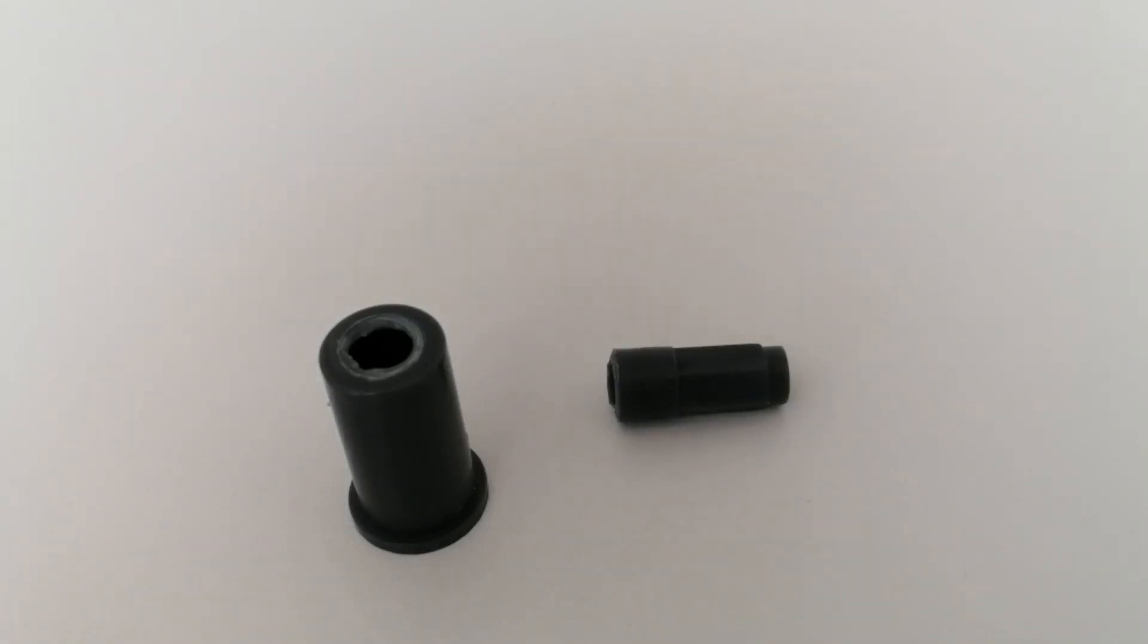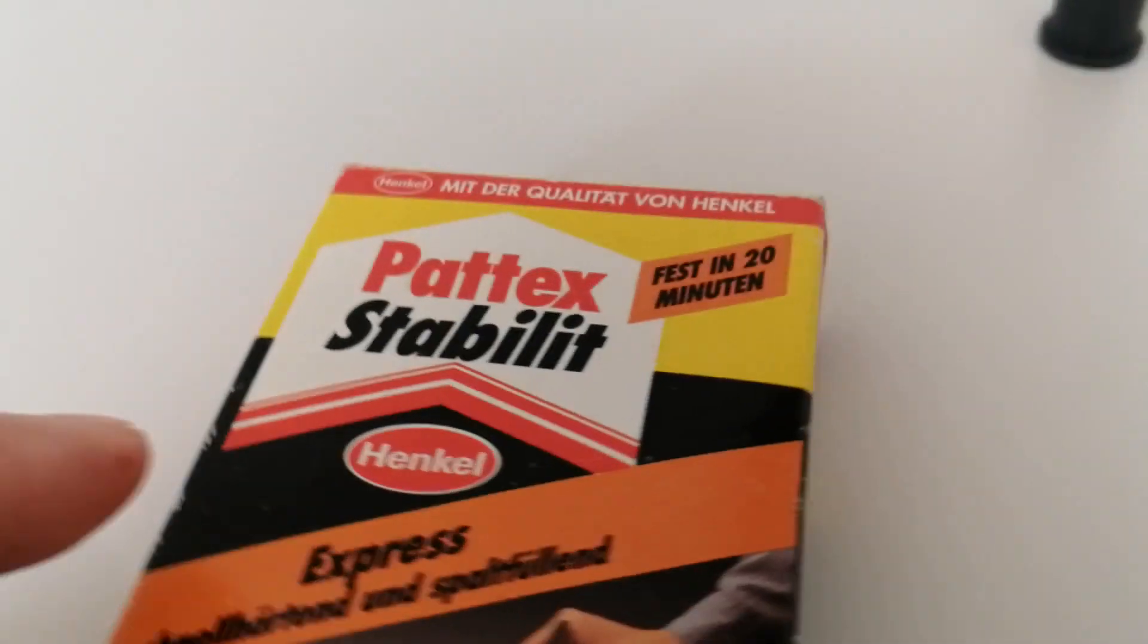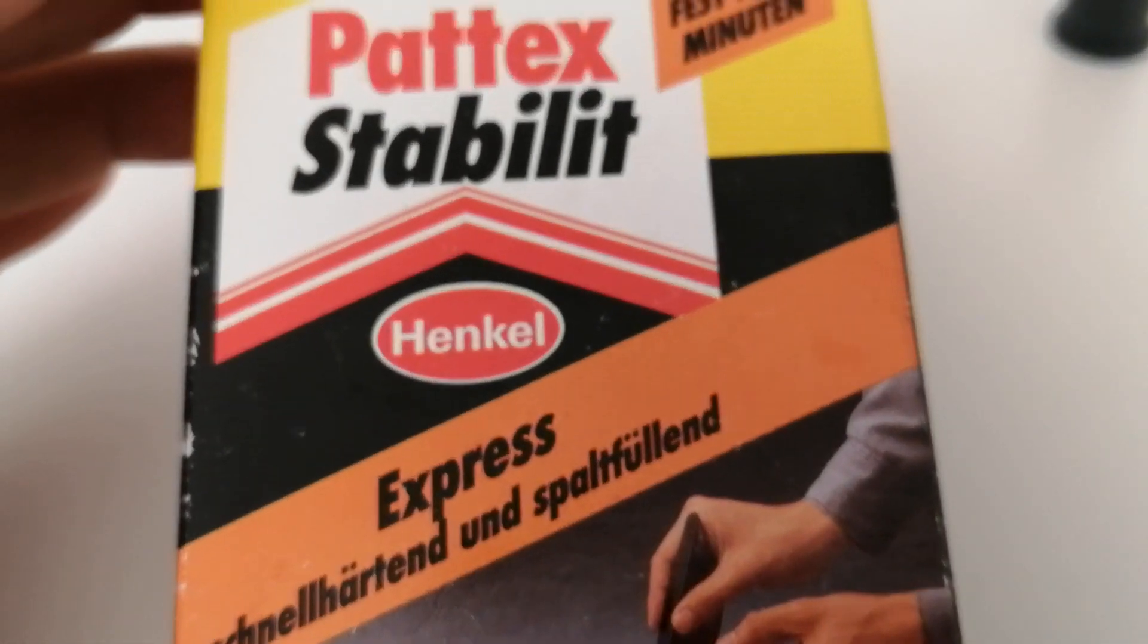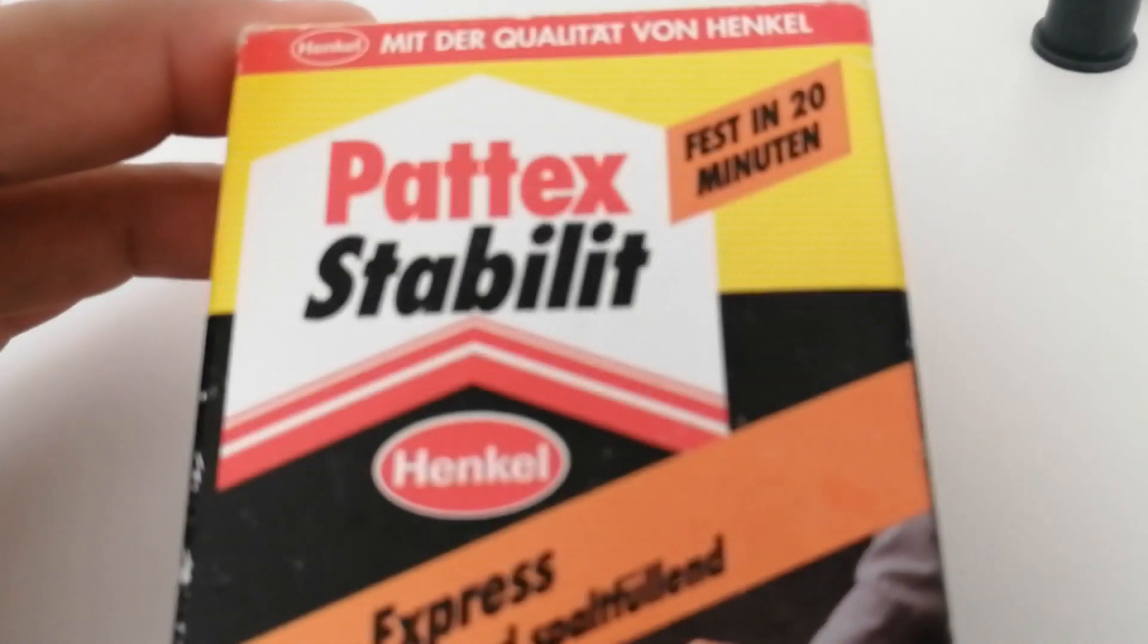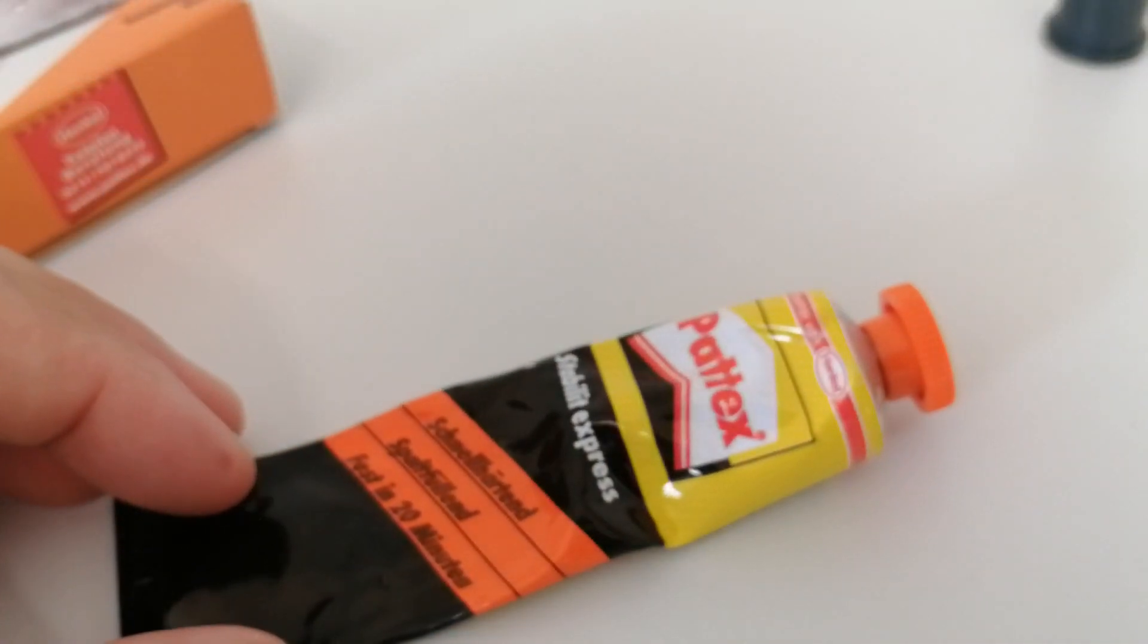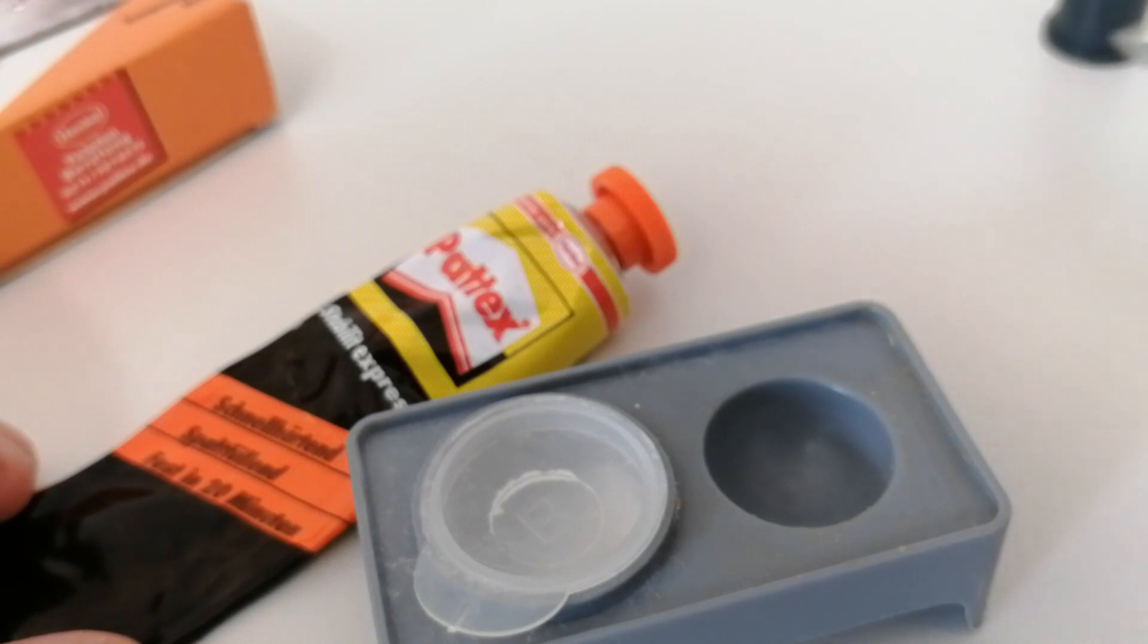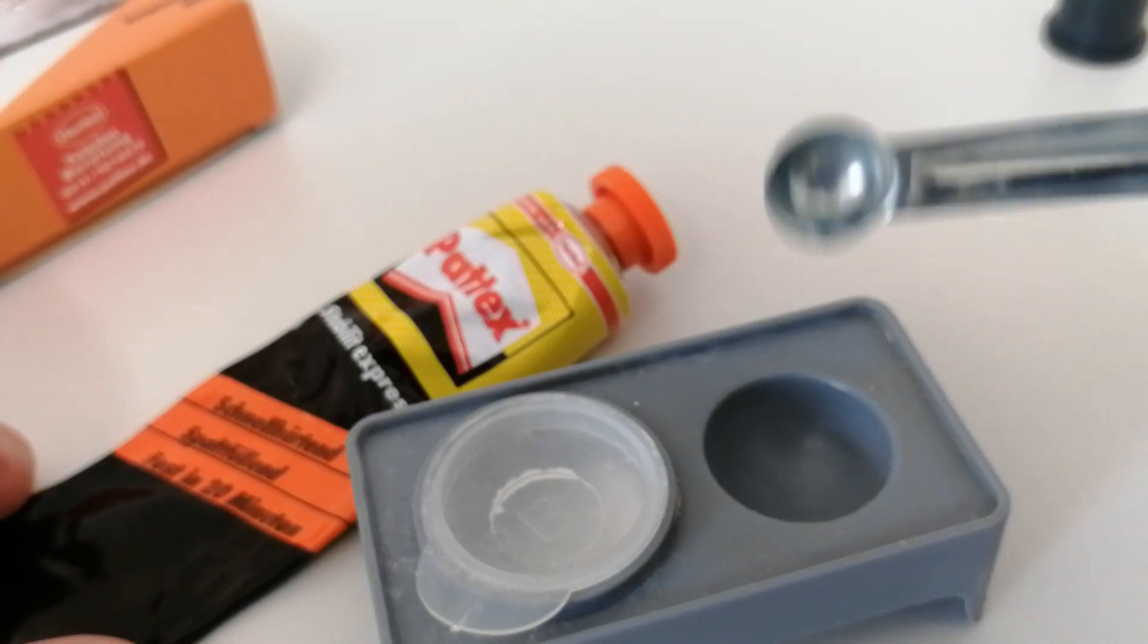In order to bond this, since it's a load-bearing part, I'm not going to use any super glue. I'm going to use this really strong Pattex Stabilit two-part glue that comes like this. There's some powder as well and a spatula to put some powder in this region, and it comes with this mixing tool as well.